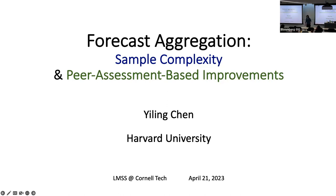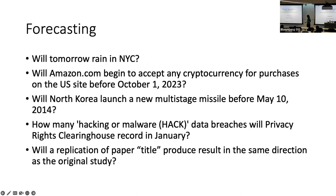Thank you so much. Thanks for having me here. Today I'm going to talk about a question we call forecast aggregation. It appears to be a very simple question, but it has been demonstrated to be quite challenging in practice. I want to look at a setting of how many samples a data-driven algorithm needs to do aggregation, examining the sample complexity of the problem. And then we'll look at the more practical setting where we only have the forecasts from participants or experts and no other information — can we still improve aggregation accuracy?